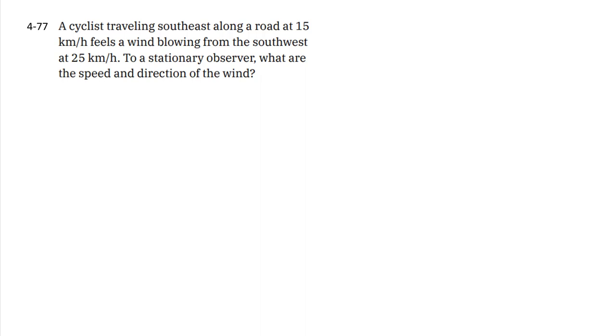So here we have a cyclist traveling southeast along a road. So presumably the speed of the cyclist is relative to some stationary observer, which is referred to again towards the end. So we would say that the velocity of the cyclist relative to this observer is, if we put a north-south-east-west type deal here, it's going southeast. So that's this direction at 45 degrees, because it's exactly southeast perfectly in the middle, at 15 kilometers per hour.